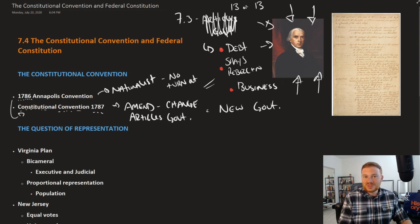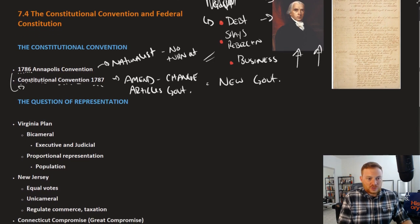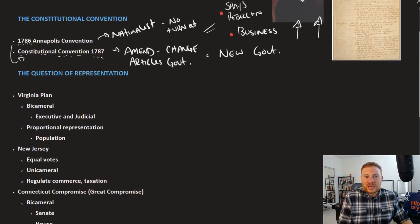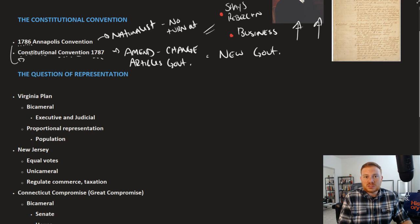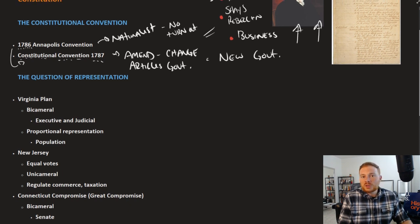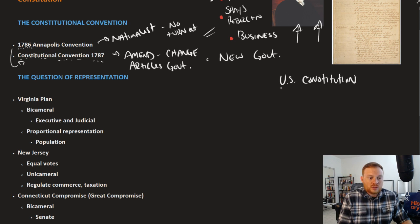That's what they decided was necessary in order to get the nation back on track. At the Constitutional Convention, there was much disagreement. For a couple of months in 1787, 55 men from the 13 states sat in a room and figured out what would be a way to organize a national government. What they created — the U.S. Constitution — is still the Constitution that we have to this day.